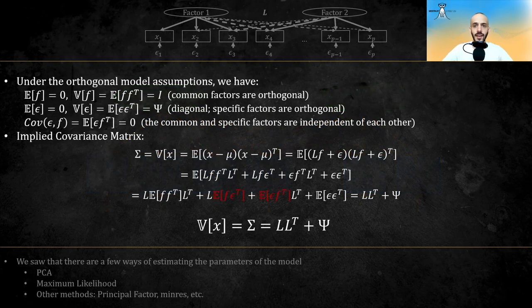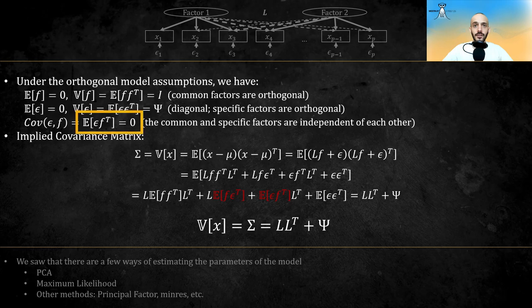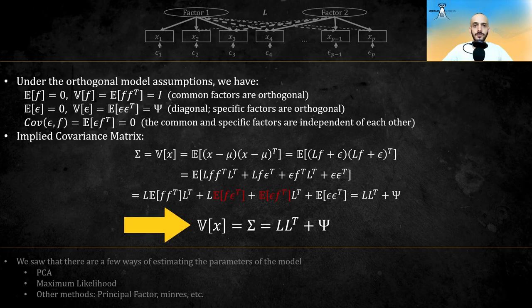The orthogonal model assumes that the factors are orthogonal to each other, that is that there is no correlation between them, and that they are orthogonal to the uniqueness, the epsilons. Given these assumptions, we can derive the implied covariance matrix as a function of our unknown parameters, the L matrix of coefficients and the psi matrix of specific factors' variances.